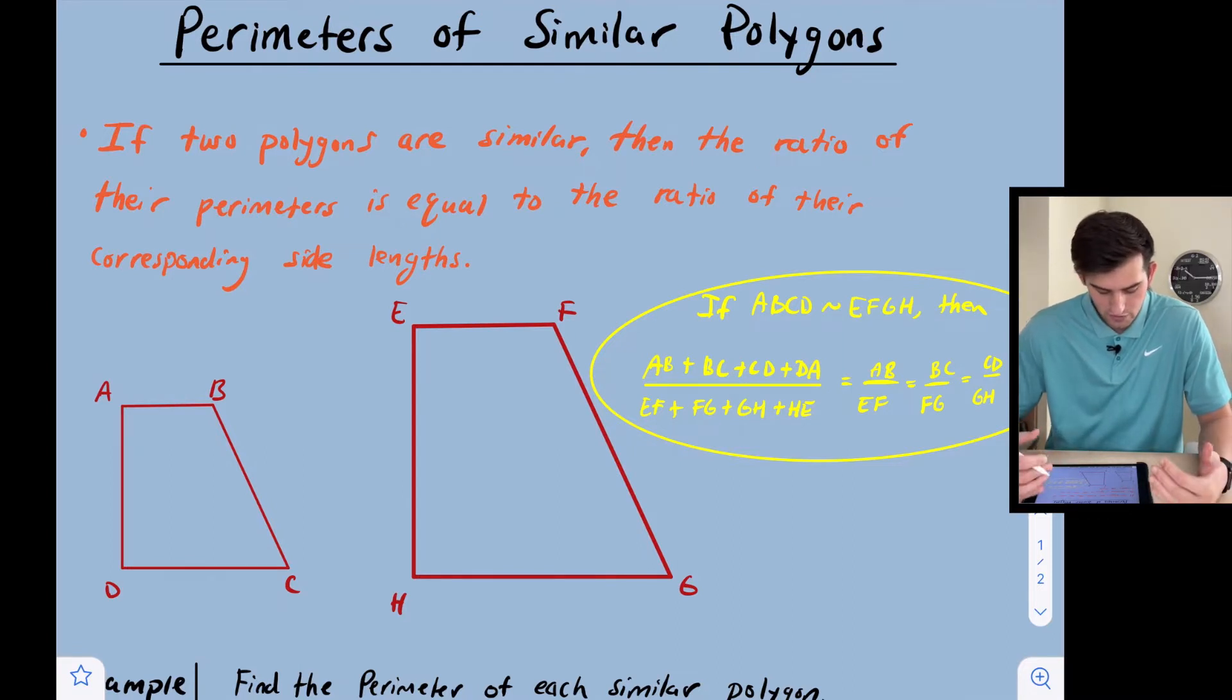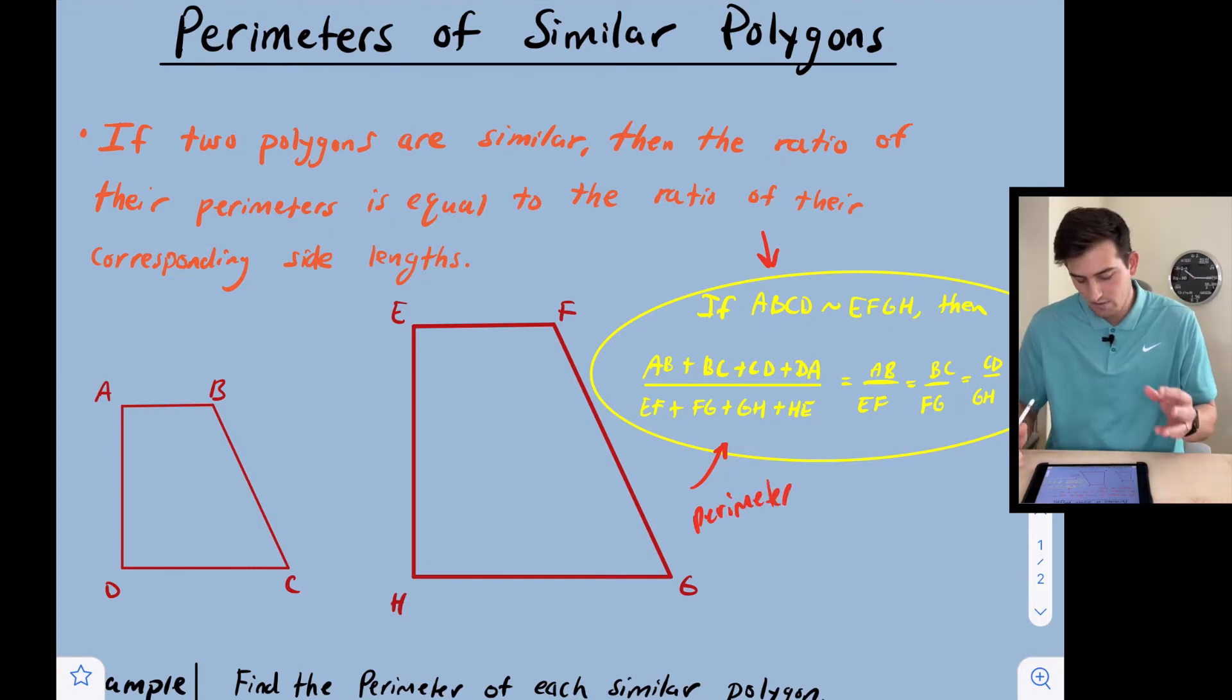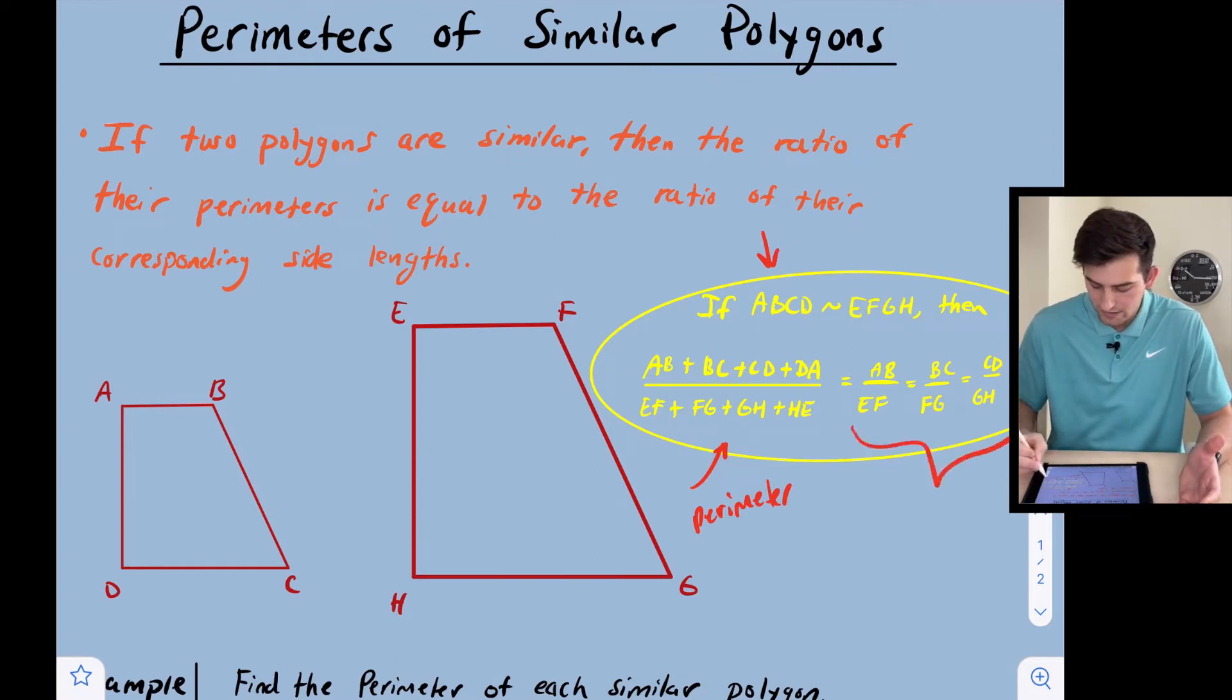We have a couple examples here: quadrilateral ABCD and quadrilateral EFGH. If ABCD is similar to EFGH, then their perimeters—adding up all the sides AB plus BC plus CD plus DA divided by EF plus FG plus GH plus HG—is going to be equal to the ratio of their corresponding sides.